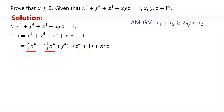For two non-negative numbers x1 and x2: x1 plus x2 is greater than or equal to 2 times the square root of x1 times x2, with equality if and only if x1 equals x2. Applying this: a quarter times x to the power of 4, plus y to the power of 4, is greater than or equal to 2 times the square root of a quarter times x to the power of 4 times y to the power of 4, which equals x squared y squared.